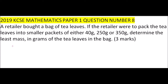In simple words, you are required to find the LCM of these three values: 40, 250, and 350. This value allows you to pack packets of 40 grams and get an exact number of packets without any remainder of the tea leaves. The same applies for 250 or 350 grams.